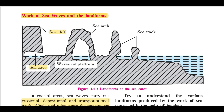Sea arch and sea stack are formed this way. Suppose there is a large rock near the seashore in the water — because of sea waves it gets eroded and a pillar-like structure is formed, which we call a sea stack. Remember these erosional landforms formed by sea waves.